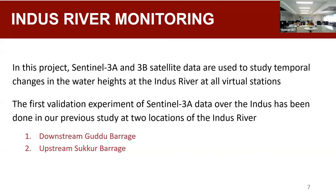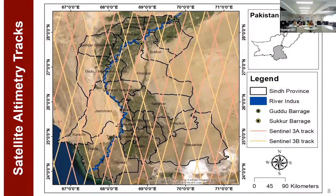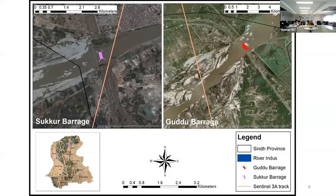Since we already had water level measuring gauges at the barrages, we had both in-situ and satellite data, making it easy to compare both and assess how well they fit each other. You can see on this Sindh map the Sentinel-3A and 3B tracks. The locations studied were Guddu Barrage and Sukkur Barrage, where Sentinel-3A tracks are available. A closer view shows the track upstream of Sukkur Barrage and downstream of Guddu Barrage.